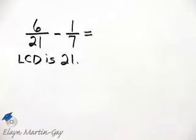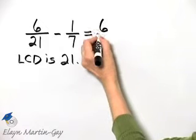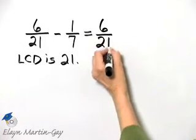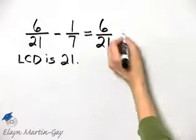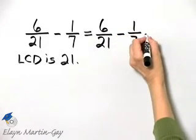So we can write each fraction as an equivalent fraction with a denominator of 21. Of course, the first fraction already has a denominator of 21 so I'll move to the second fraction and ask myself,